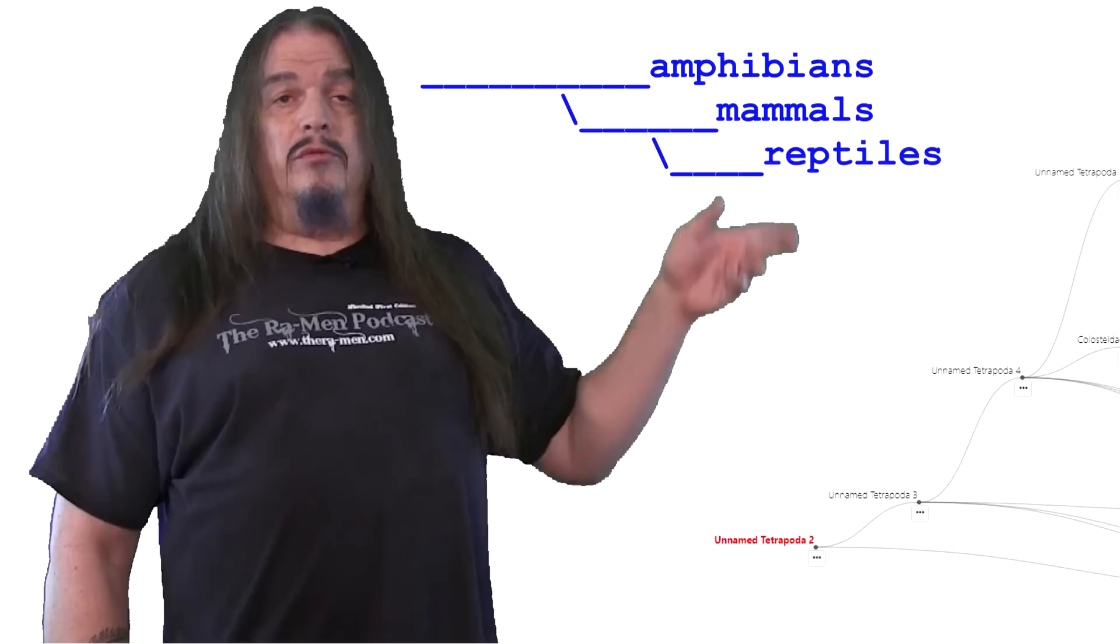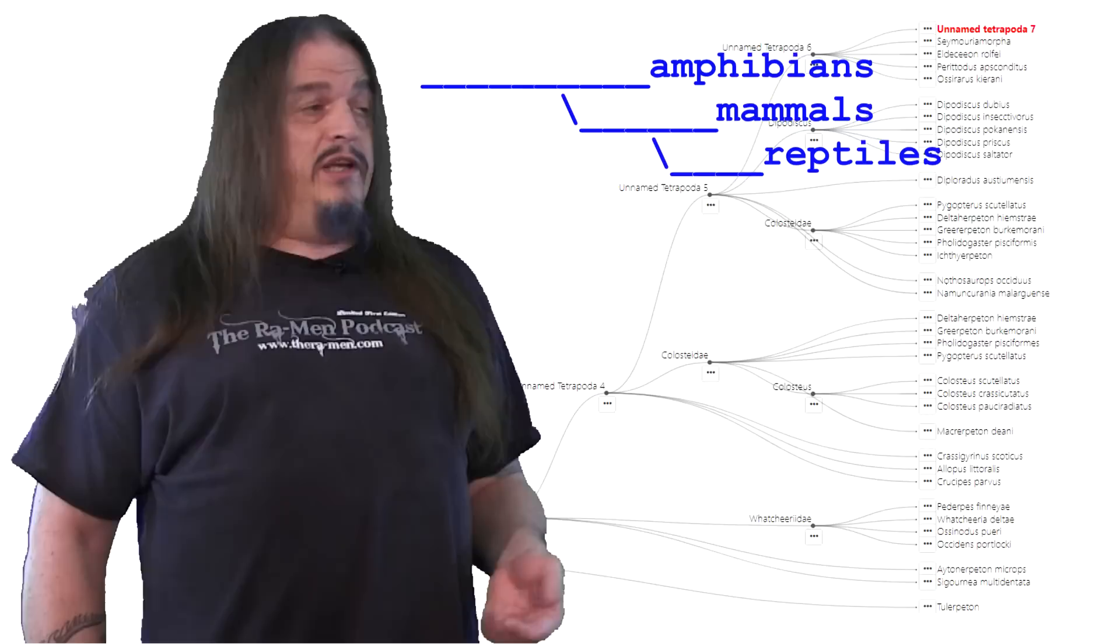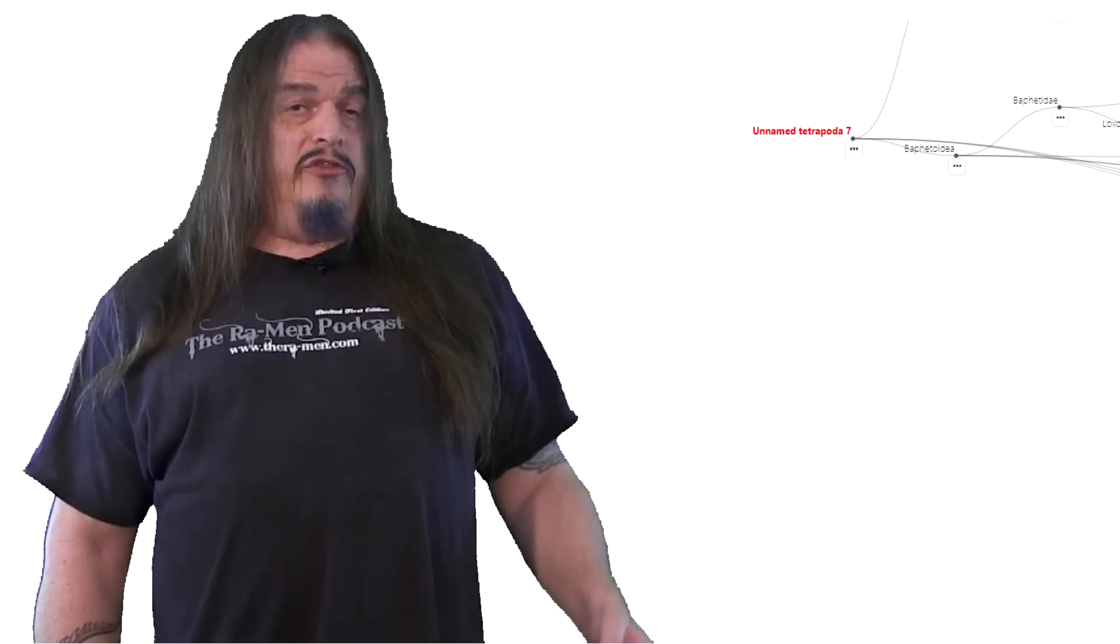Every lineage of all the species on every page of this sequence is dead, except for one single line coursing through all of these. The one that survived every sequential extinction event and subsequently subdivided to diversify into every mammal we have today.